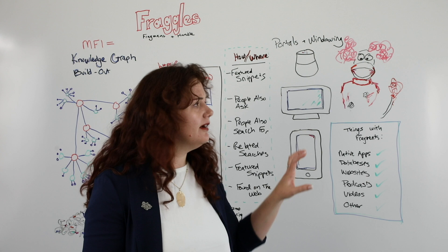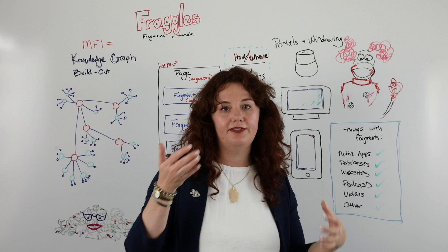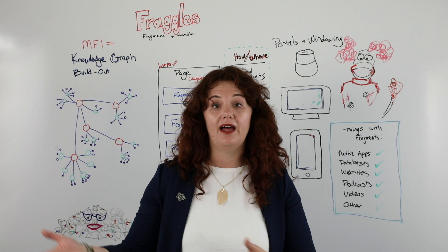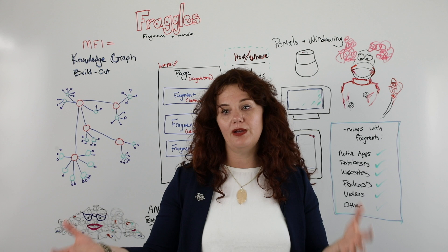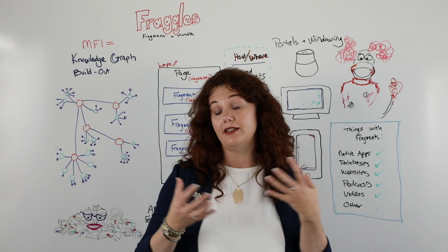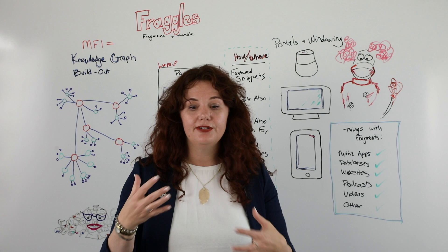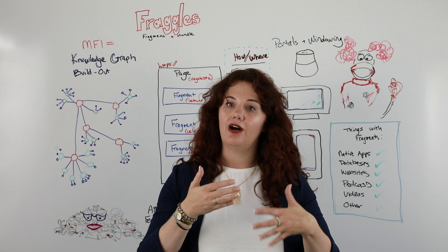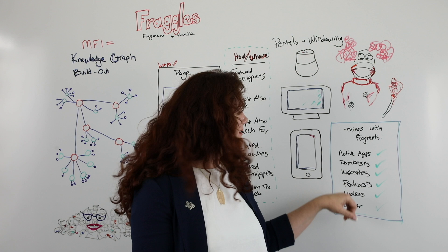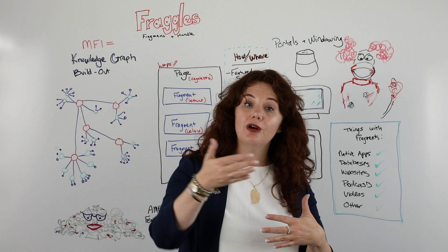Some SEOs are getting upset that Google is lifting so much content and putting it in the search result, and that you're not getting the click. We know that 61% of mobile searches don't get a click anymore, because people are finding the information they want directly in the SERP. That's tough for SEOs but great for Google, because it means Google's providing exactly what the user wants. I think SEOs are going to change their mind and want to be in that lifted content. Because when Google starts doing this for native apps, databases, websites, podcasts, and other content, those are new competitors you didn't have to deal with when it was only websites ranking.